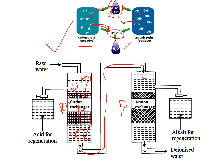This water is then passed into the second vertical tank, which contains the anion exchange resin. The anion exchange resin has a number of OH⁻ ions. All anions are replaced by OH⁻ ions — for example, if one Cl⁻ is captured by the anion exchange resin, one OH⁻ is released into the water. The H⁺ ions and OH⁻ ions then combine with each other.